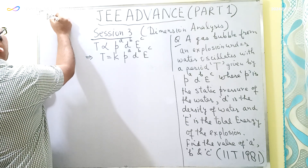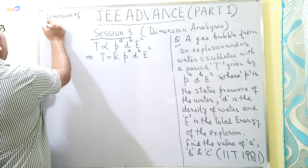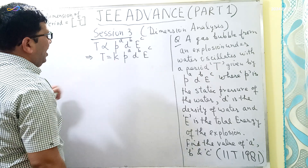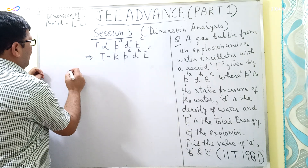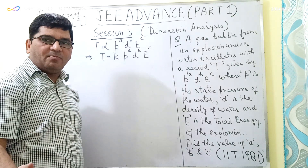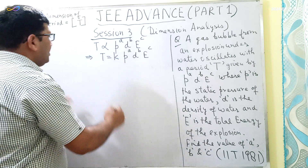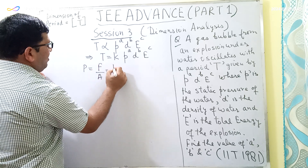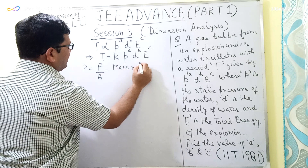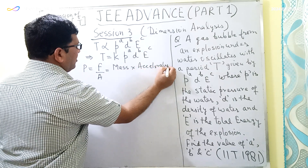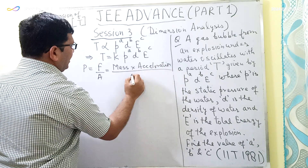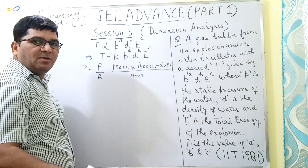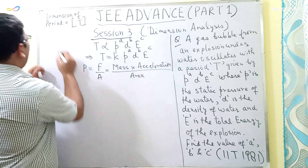The dimension of period is T. Now we have to find the dimension of pressure. Pressure in any form will have the same dimension, so I will use the equation: pressure = force / area. Force = mass × acceleration, divided by area. The dimension of area is L², the dimension of mass is M, and the dimension of acceleration is L¹T⁻².